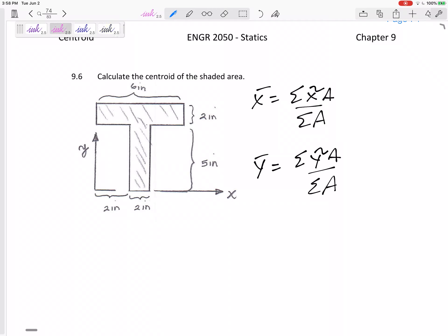All right, this one I can break up into two shapes. This pink rectangle right here, and this blue rectangle right here. So I can do the x tilde of the pink one times the area of the pink one plus x tilde of the blue one times the area of the blue one divided by the area total.